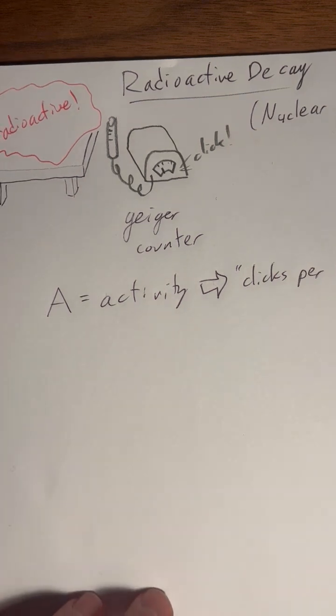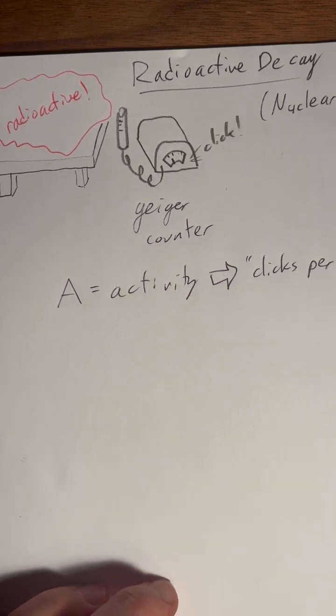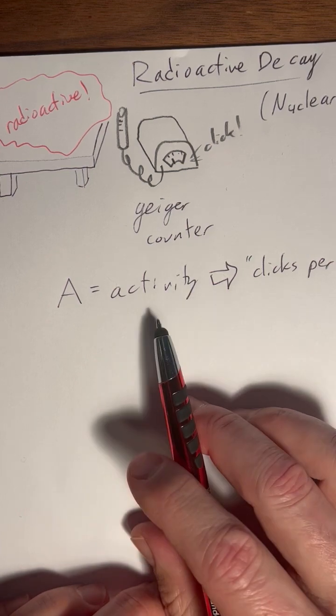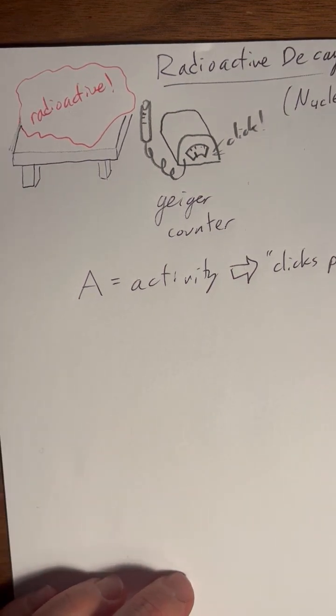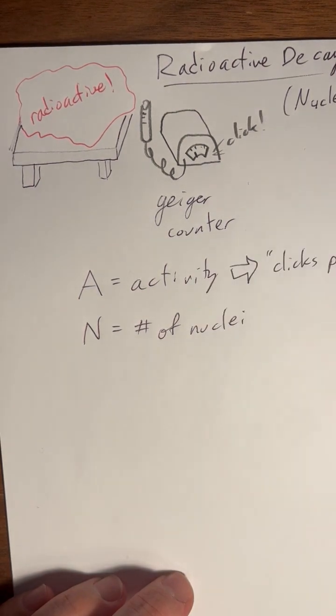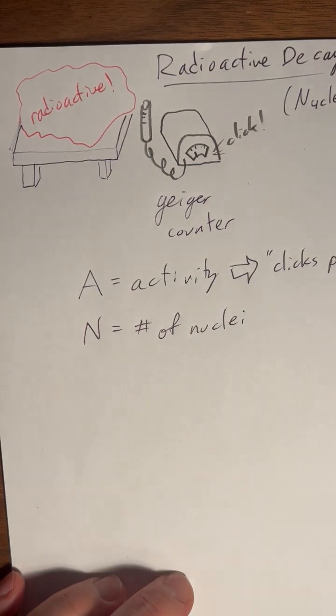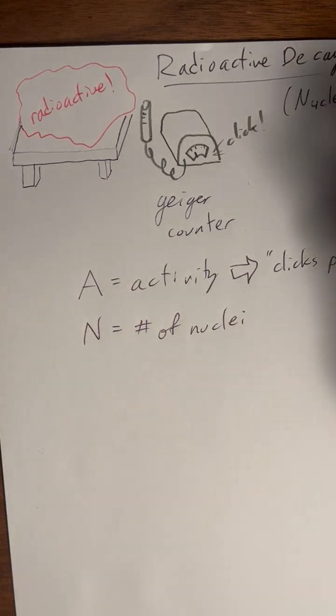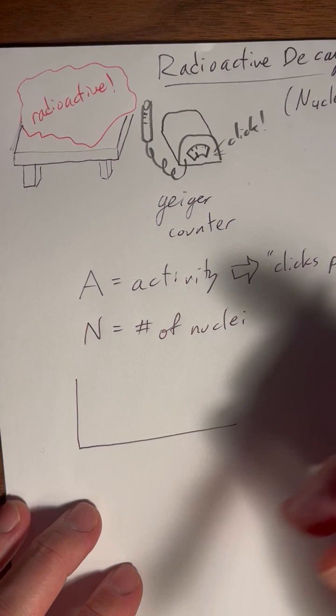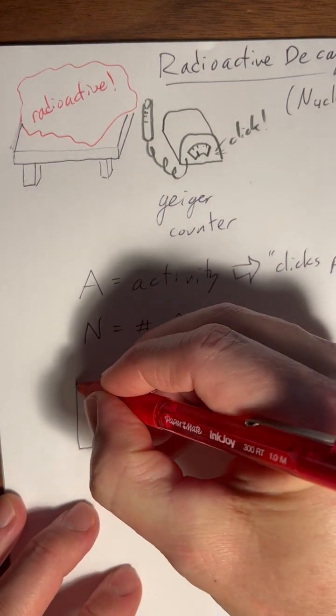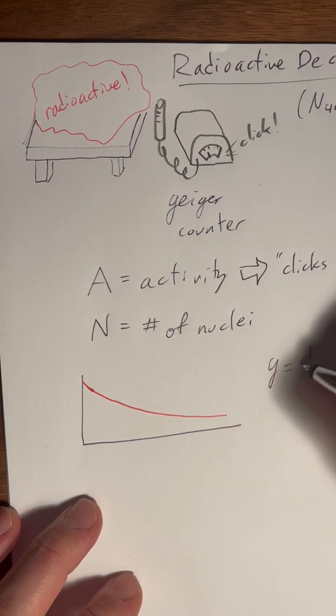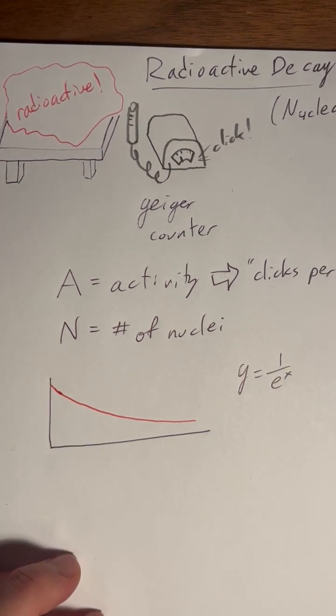And that activity is the change in nucleotides. So if you're using your Geiger counter, you're going to count the number of clicks in a certain amount of time. And that's going to be your activity. It could be decays per second, decays per minute, decays per year. And if you measure that decay over time, the activity, the number of decays per second or whatever, is going to decrease. This is the y equals 1 over e to the x, or the y equals e to the negative x.